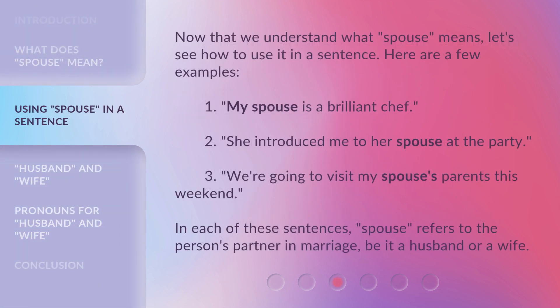Now that we understand what 'spouse' means, let's see how to use it in a sentence. Here are a few examples. 1. My spouse is a brilliant chef. 2. She introduced me to her spouse at the party. 3. We're going to visit my spouse's parents this weekend. In each of these sentences, 'spouse' refers to the person's partner in marriage, be it a husband or a wife.